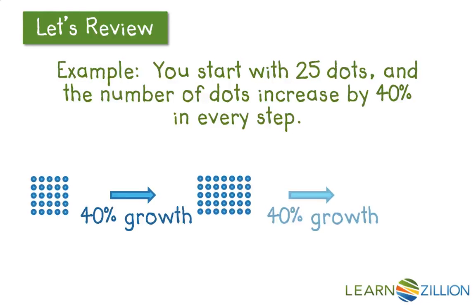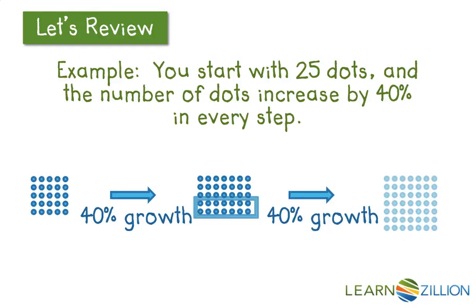Now I want to have this population grow by 40% one more time. I need to take 40%, or two-fifths, of this group and add it on. You'll notice I'm adding a different, larger amount to the population, but the percentage of growth remains the same. In exponential growth, the amount by which the population grows increases, but the ratio of growth remains constant.